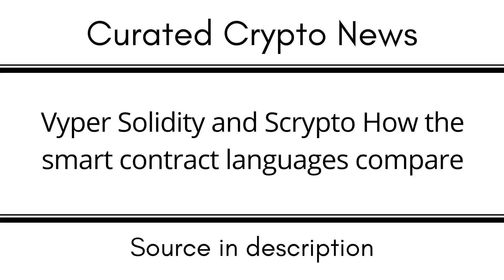Since Solidity is a high-level language, code is written in an easily understandable, human-readable manner — using words and phrases like 'function' and 'contract,' as well as curly brackets and numbers, rather than ones and zeros. Being object-oriented means Solidity revolves around objects — pieces of code that can be reused to create similar code without rewriting the original each time. Solidity uses a compiler to convert human-readable code into machine-readable code executed on the Ethereum Virtual Machine (EVM).